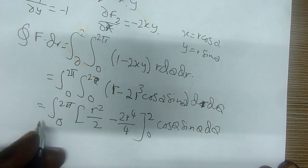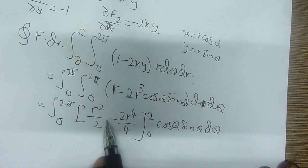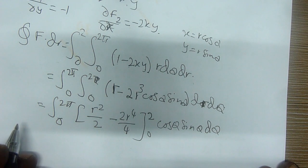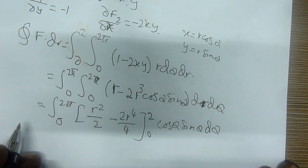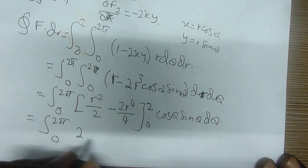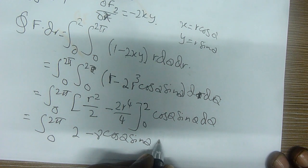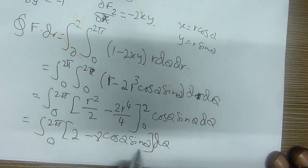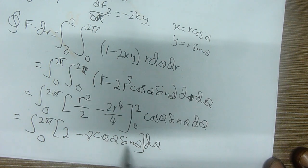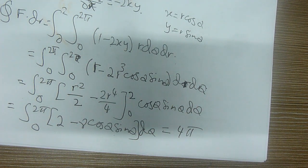The answer is 4 pi. This is how we solve the problem using option one — Green's theorem. But I want to further do option 2 as well. Let us do option number 2. I hope that you can follow me.